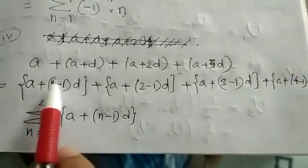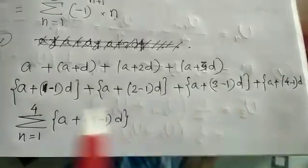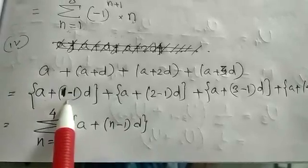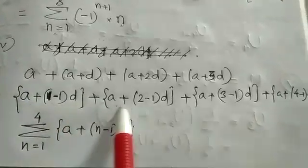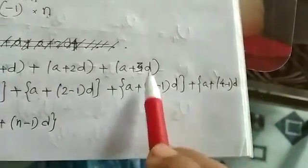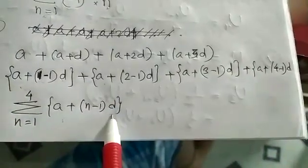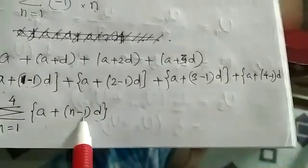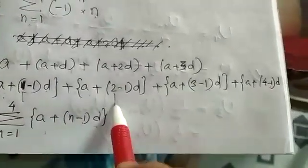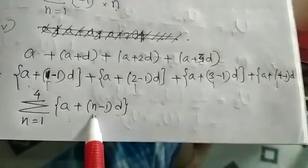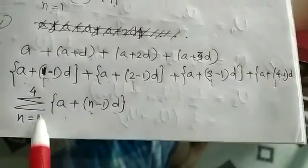Question number 4: a plus (a plus d) and so on up to (a plus 3d) is given. I rewrote each term: the first is a plus (1 minus 1)d = a; the second is a plus (2 minus 1)d; the third is a plus (3 minus 1)d; and the fourth is a plus (4 minus 1)d. All terms contain a and d, so I wrote those outside. The part that changes is n, replacing 1, 2, 3, 4, so the general term is a plus (n minus 1)d, with n running from 1 to 4.